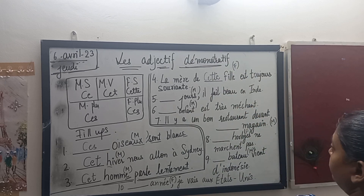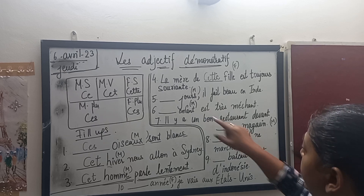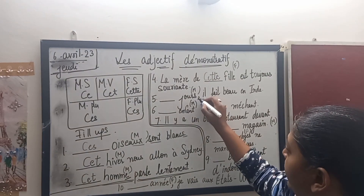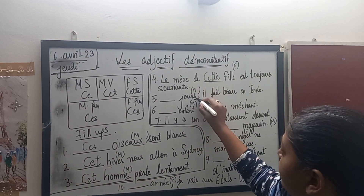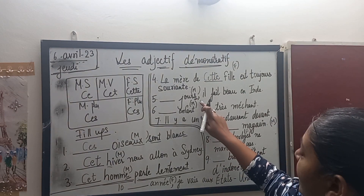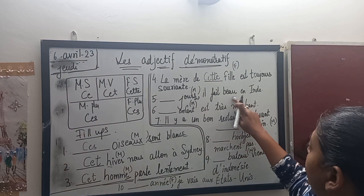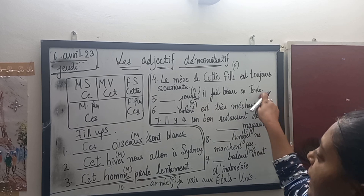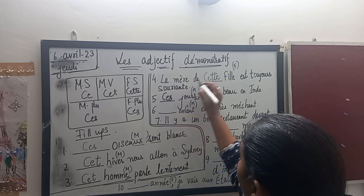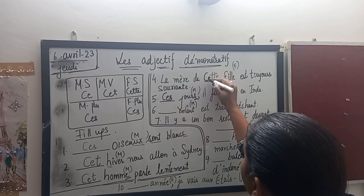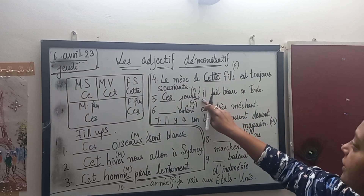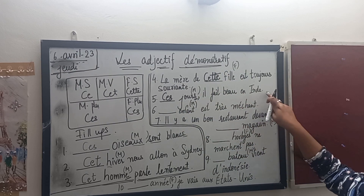For the fifth sentence: jours. Jours means days. Jours is masculine, but here we can see that it ends with S, so it is masculine plural. Il fait bon en Inde — these days it is pleasant in India. So we will go for plural: C-E-S.